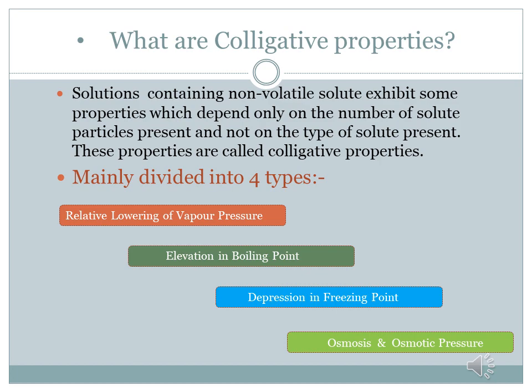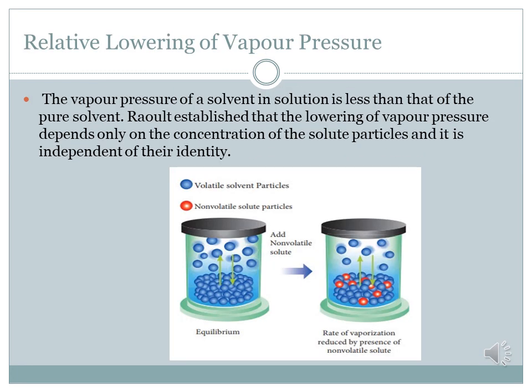In the next slide we are going to discuss these four types of colligative properties in detail. The first topic is relative lowering of vapor pressure. The vapor pressure of a solvent in a solution is always less than that of the pure solvent. This means the vapor pressure of a solvent before mixing with solute is always more than after mixing. Looking at the diagram, volatile particles are floating in that cylindrical box up to the surface.